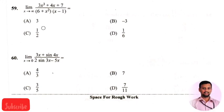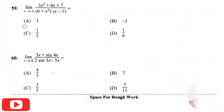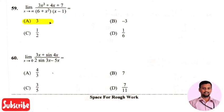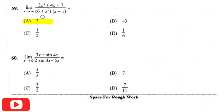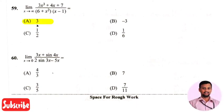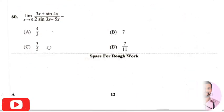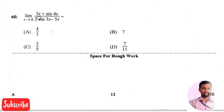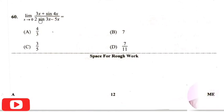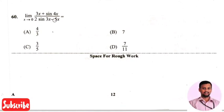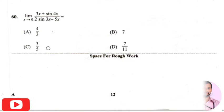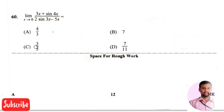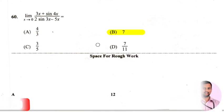The next question is: limit of (three x plus sine four x) divided by (two sine three x minus five x) — the right answer is option two, that is seven.